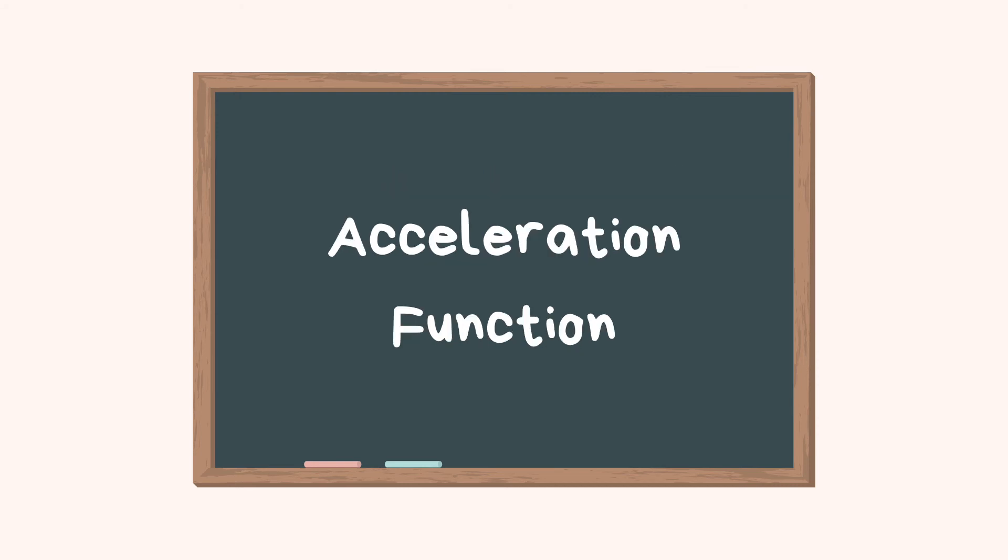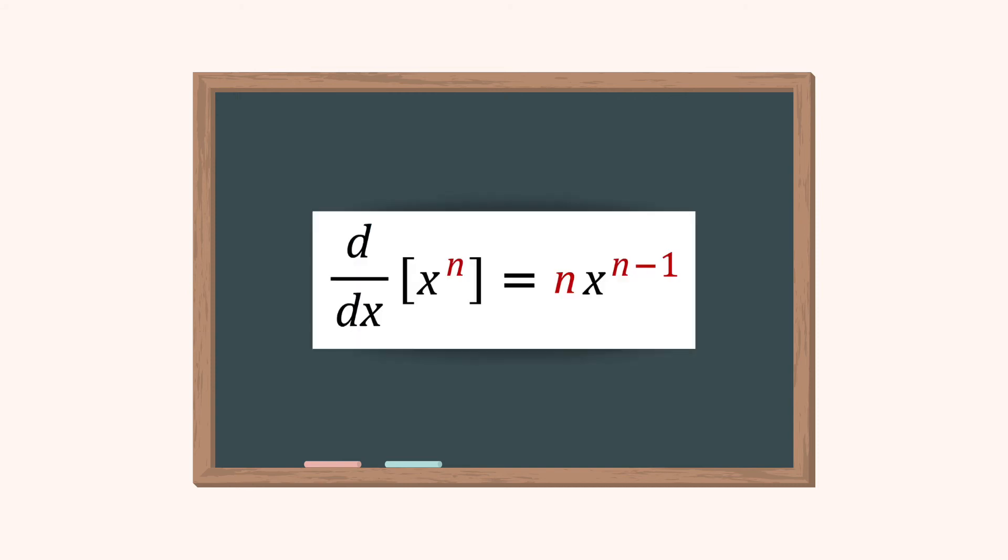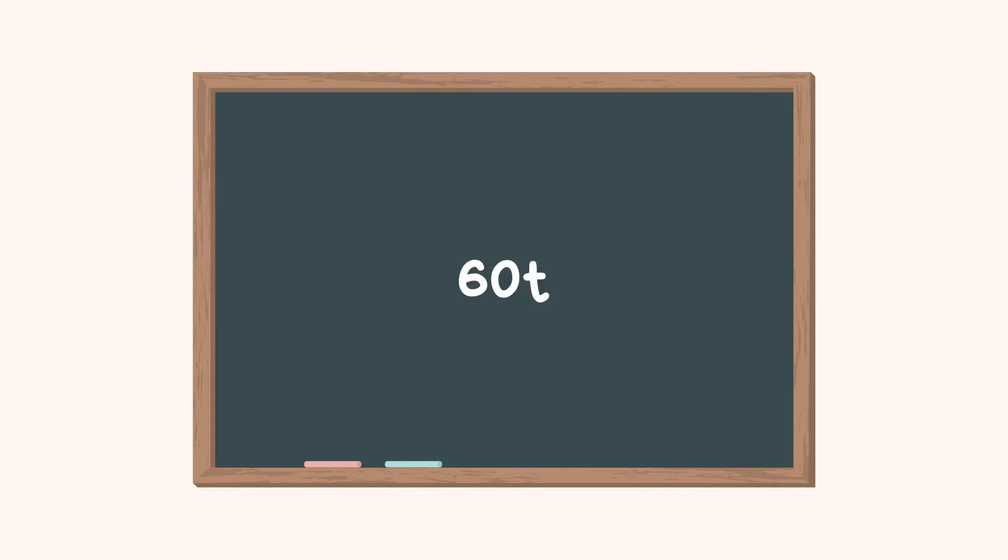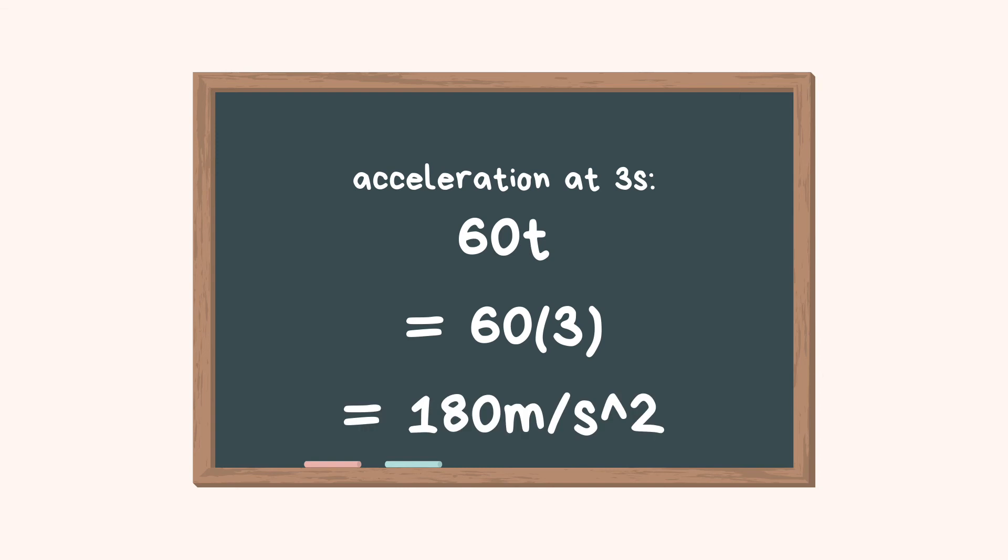Secondly, we need to find the acceleration function. To find the function, we have to find the derivative of the velocity function. To do this, we use the power rule once again just like the first equation, and this should give us this equation. We insert the value once again and get 180 meters per second squared.